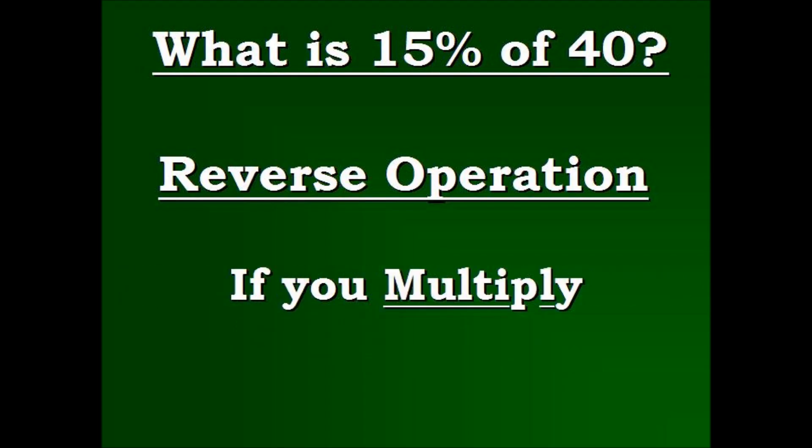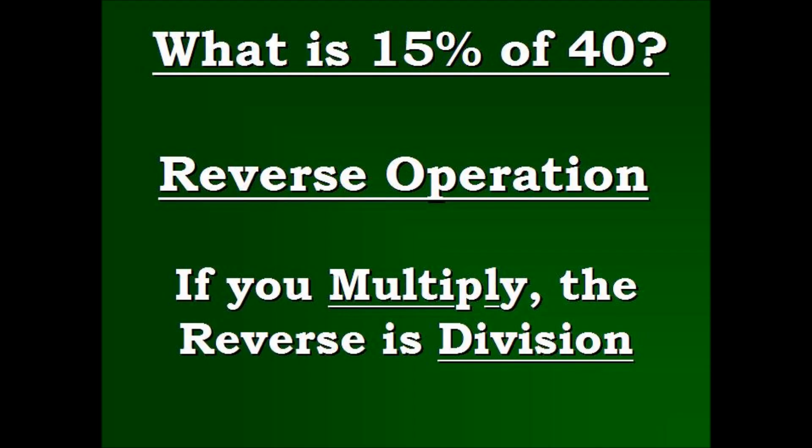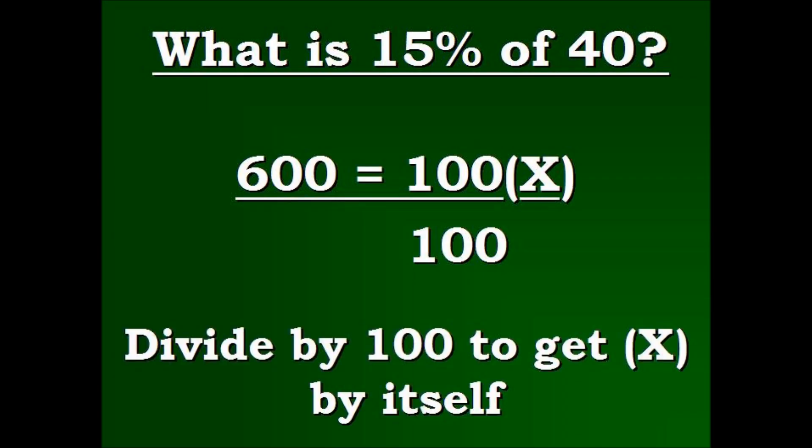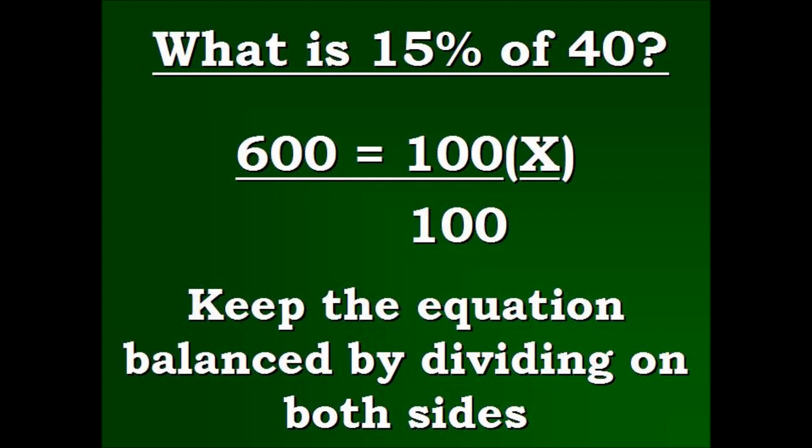If you multiply, you divide in order to cancel out the first operation. To make it make all sense to you, we're going to work the problem. To get x by itself, since 100 is multiplied into x, we divide 100 to reverse the operation and get x by itself. To keep the equation balanced, we must divide 100 by the other side as well.